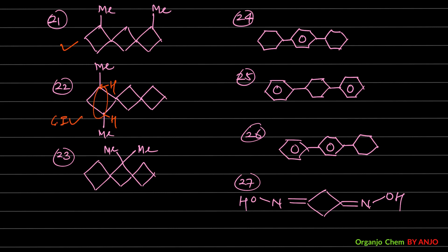Example 23: cumulative ring number is even and terminus groups are the same — no GI from the cumulative system. Individual ring also has no qualifying atoms — GI not possible for this compound. Example 24 involves benzene ring systems, which we have discussed previously — GI is possible only when three benzene rings are present (triphenyl/terphenyl system).